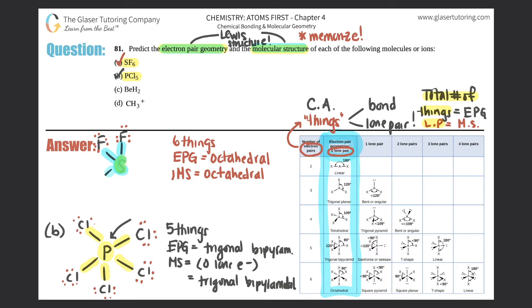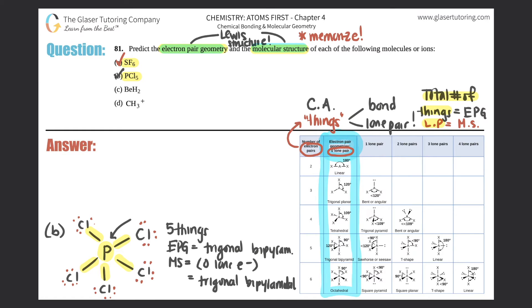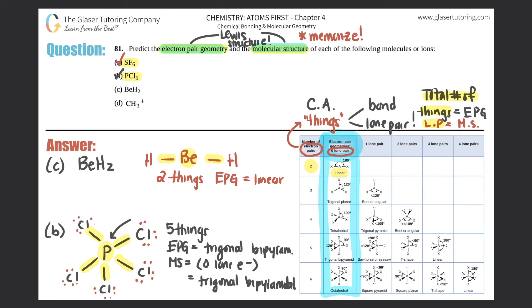Part (c): BeH2. It should be beryllium in the middle surrounded by two hydrogens with no lone pairs. The total number of things surrounding the central atom beryllium: one bond and one bond — that's two total things. Two gives us linear for the electron pair geometry. Beryllium has no lone pairs, so the molecular structure is also linear.